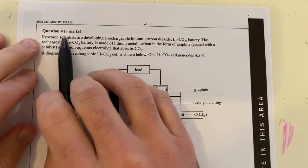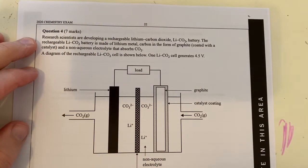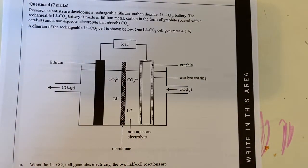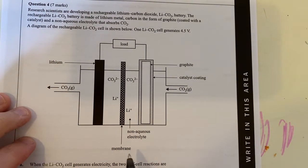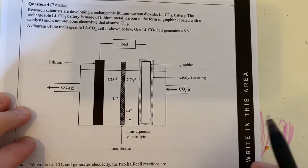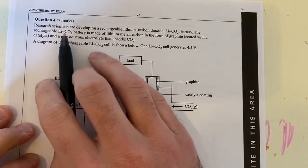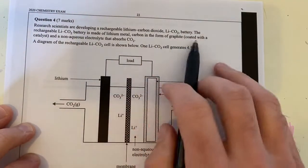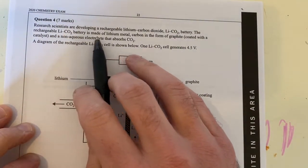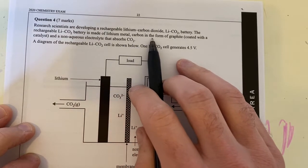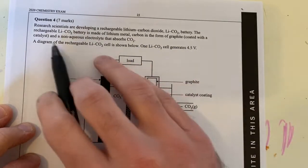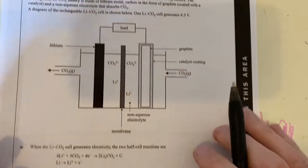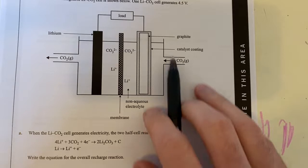We're back with question four of the 2020 VCAR chemistry exam, and this one by the looks of it is about a cell of some kind, looks like a galvanic cell. Research scientists are developing a rechargeable lithium carbon dioxide battery. The rechargeable lithium carbon dioxide battery is made of lithium metal, carbon in the form of graphite coated with a catalyst, and a non-aqueous electrolyte that absorbs carbon dioxide. This is our basic schematic diagram.